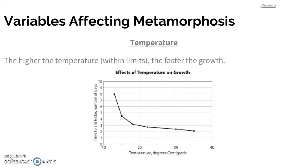There are some variables that affect metamorphosis — how quickly the insect will move through its life cycle. Temperature is one of them: the higher the temperature, the faster the growth. However, there is a temperature of about 35 degrees where growth will actually plateau. As you can see on the chart, the number of days decreased as the temperature increased — so how long it took them to move through to the third instar, which is the third larval stage.